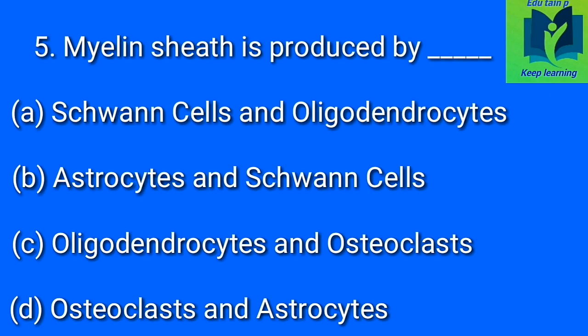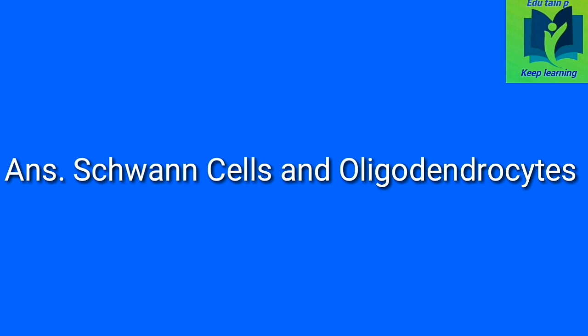Myelin sheath is produced by dash. Option A: Schwann cells and oligodendrocytes. Option B: astrocytes and Schwann cells. Option C: oligodendrocytes and osteoclasts. Option D: osteoclasts and astrocytes. Answer: Schwann cells and oligodendrocytes.